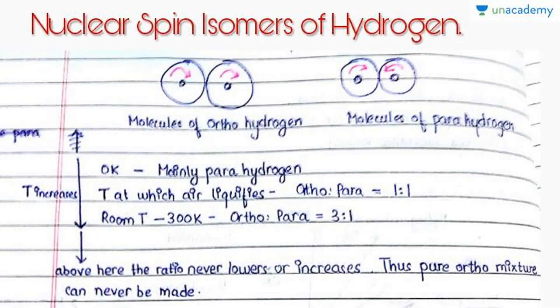These are the nuclear spin isomers of hydrogen—they differ from each other only with respect to the nuclear spin.